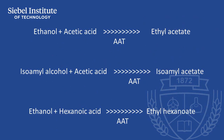For example, ethanol and acetic acid form ethyl acetate. Isoamyl alcohol and acetic acid form isoamyl acetate. And ethanol and hexanoic acid form ethyl hexanoate.